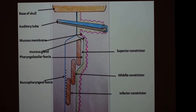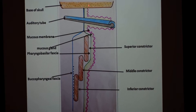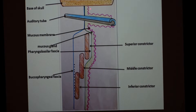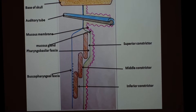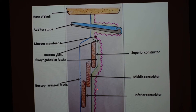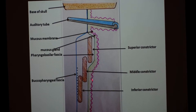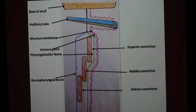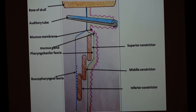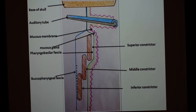In this diagram we will discuss all the layers. The first and innermost layer is the mucosa or mucous membrane, marked by the tortuous pink color lining in the diagram. The mucosa is different in different parts of the pharynx: in the nasopharynx it is mainly ciliated columnar epithelium; in the oropharynx it is non-keratinized stratified squamous epithelium; and in the laryngopharynx it is also non-keratinized stratified squamous epithelium.